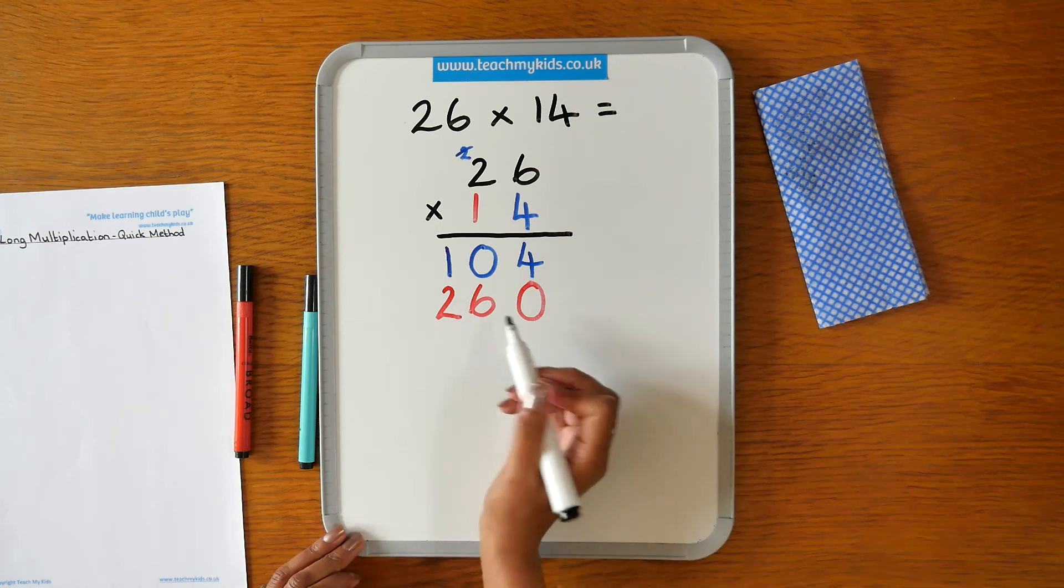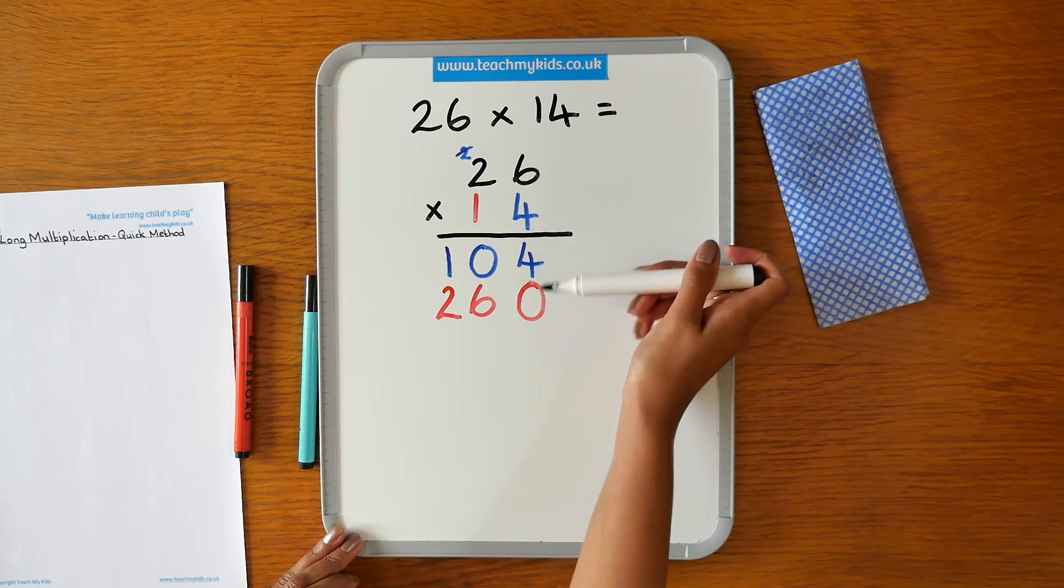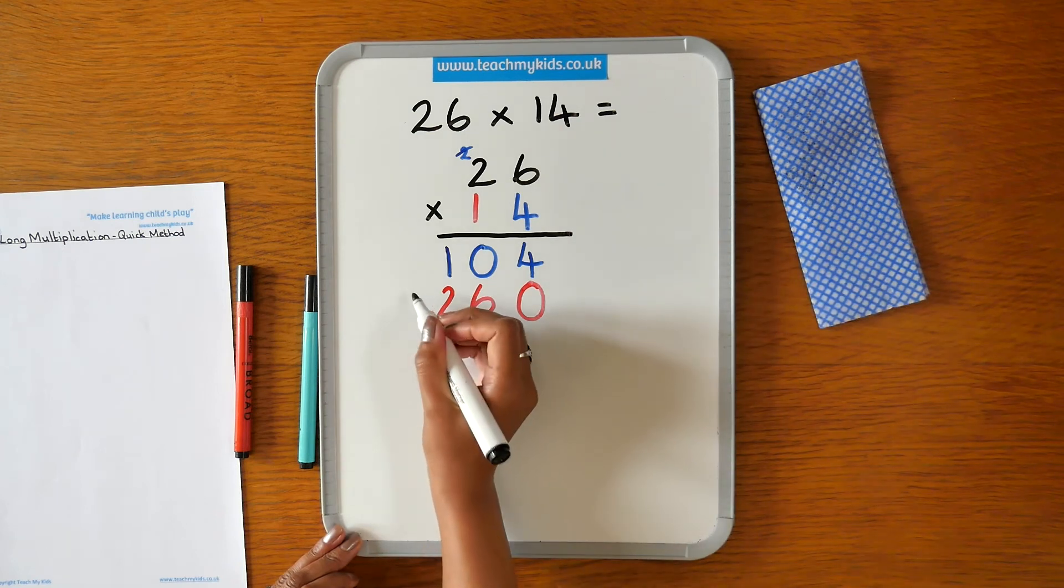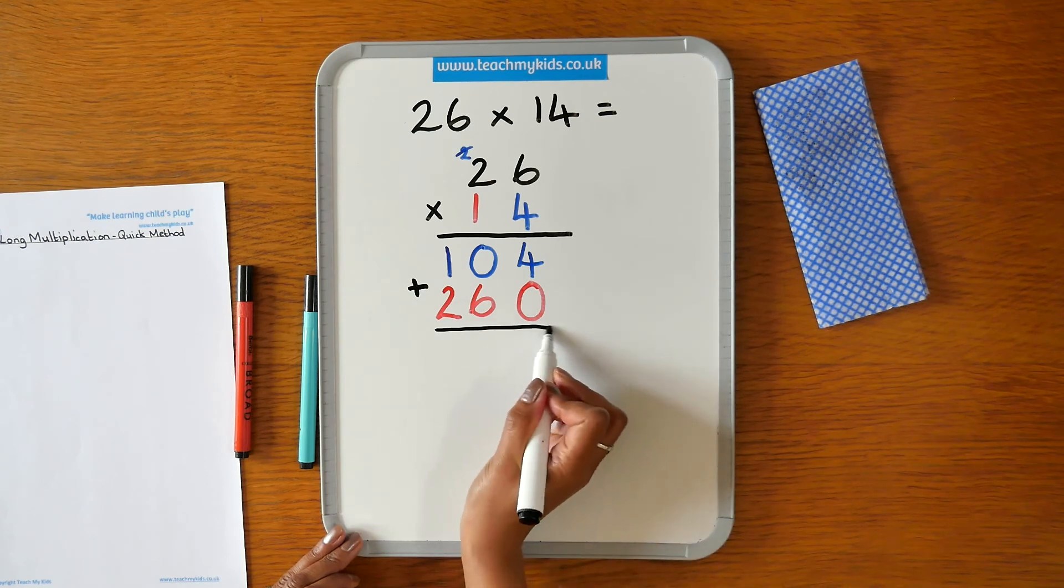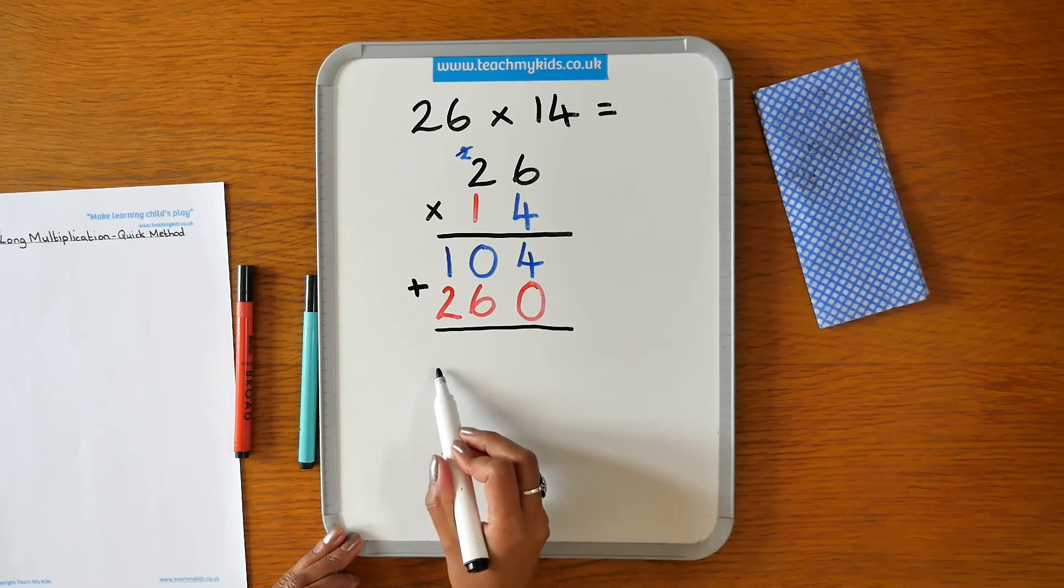The next stage is now to add the 2 numbers together. So we place our add symbol there and we're now ready to find the answer.